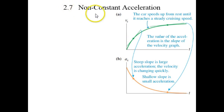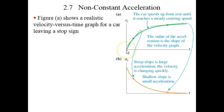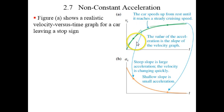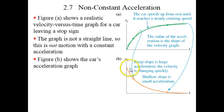Section 2.7 is about non-constant acceleration. Here we have a more realistic velocity versus time graph for a car which leaves a stop sign. Initially you're stopped at v equals zero. Then the person steps on the gas and the velocity starts increasing. As time goes on, the velocity versus time curve is not a straight line, so this motion does not have constant acceleration.